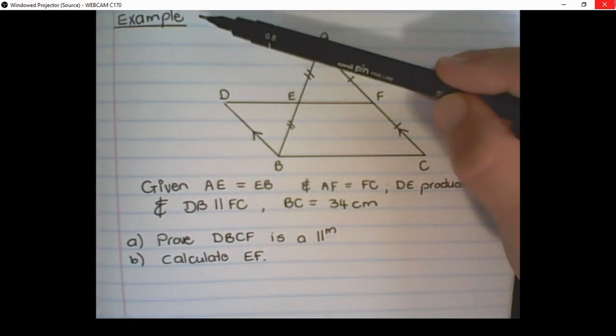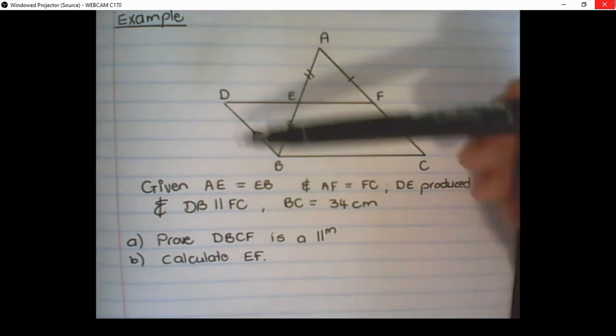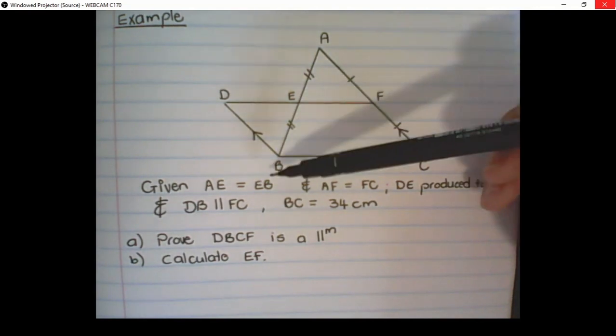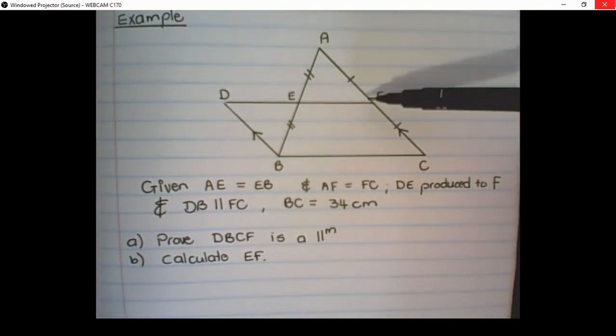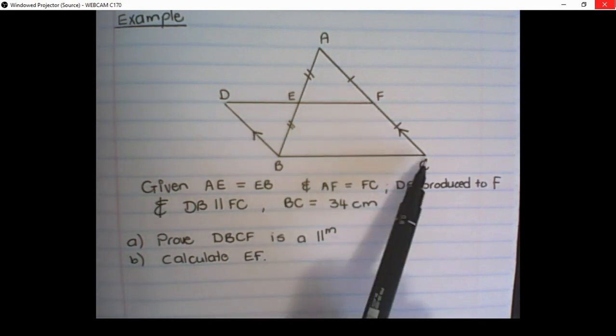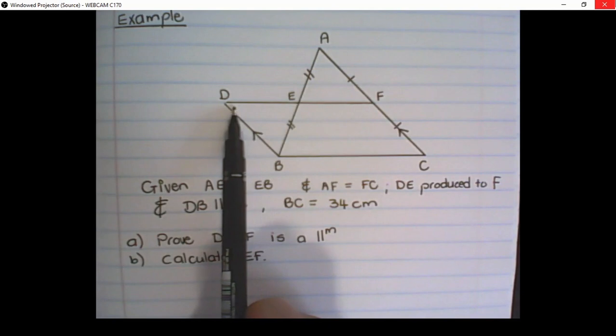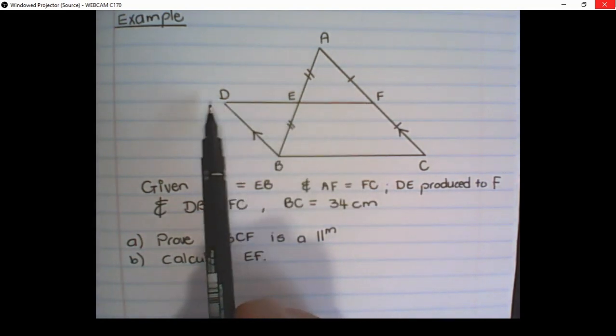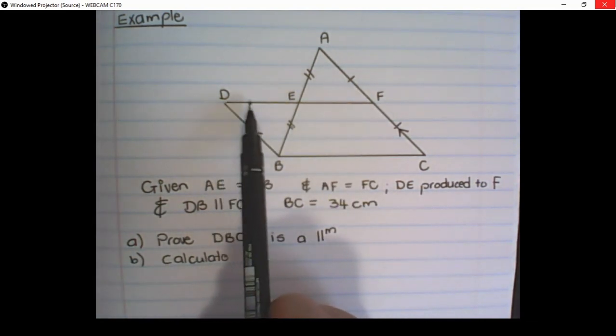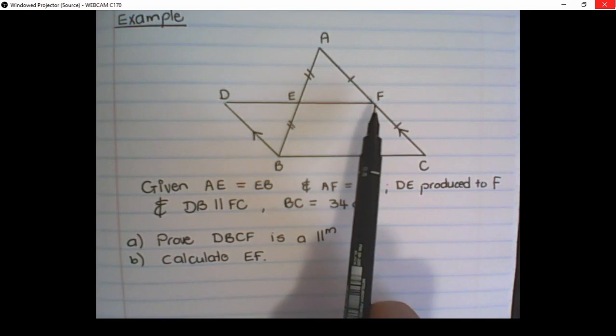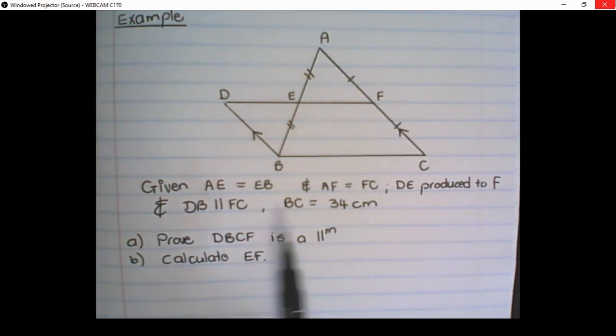Let us work on an example of how to apply the midpoint theorem. In this sketch, we have triangle ABC, with AE equal to EB, and AF equal to FC. We are also given that the line DB is parallel to FC, and that this is a straight line. It says something like DE is produced to F, which means that it is a straight line. We are also given that BC is equal to 54 cm.